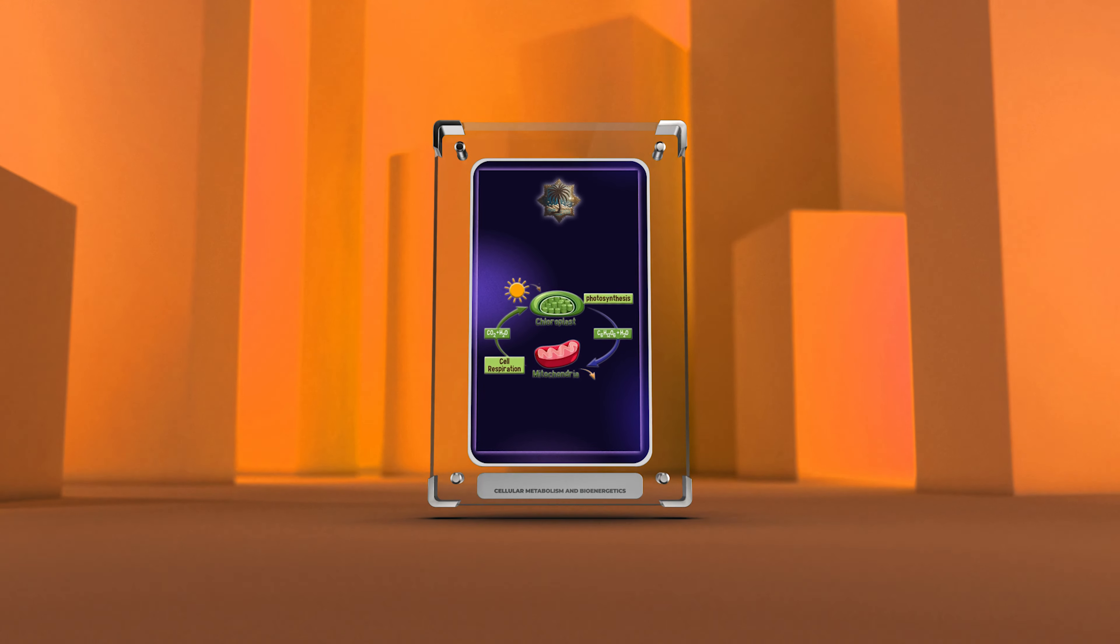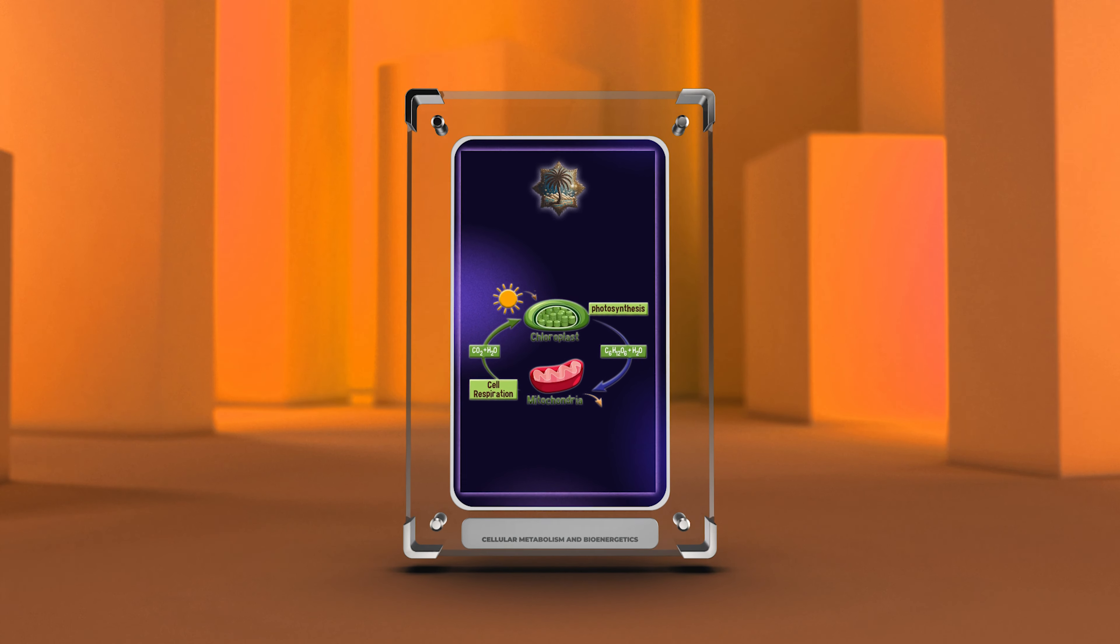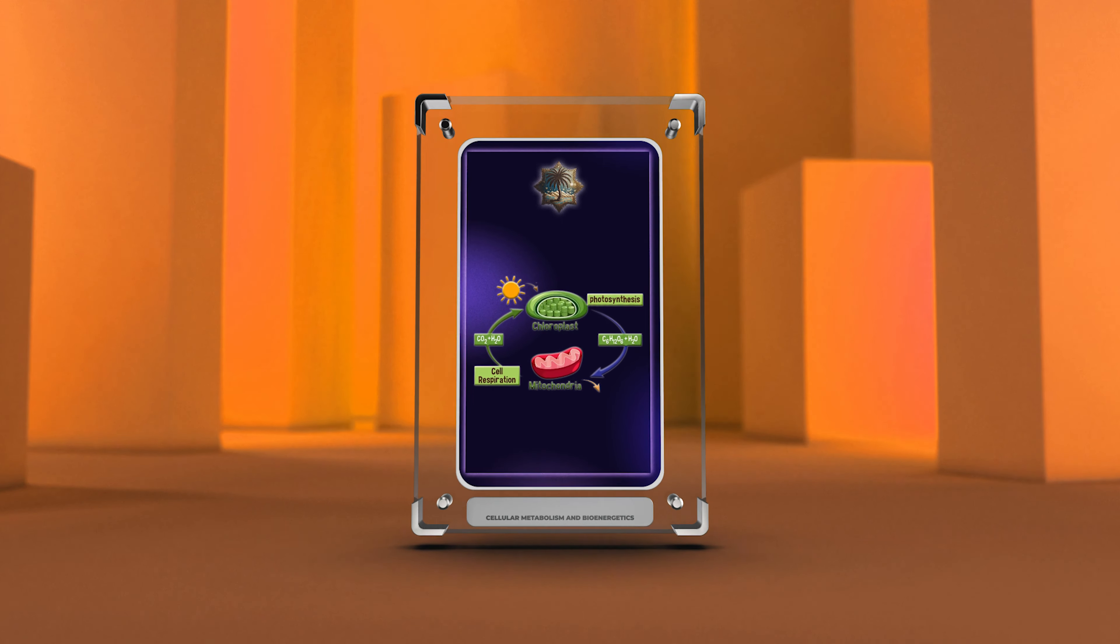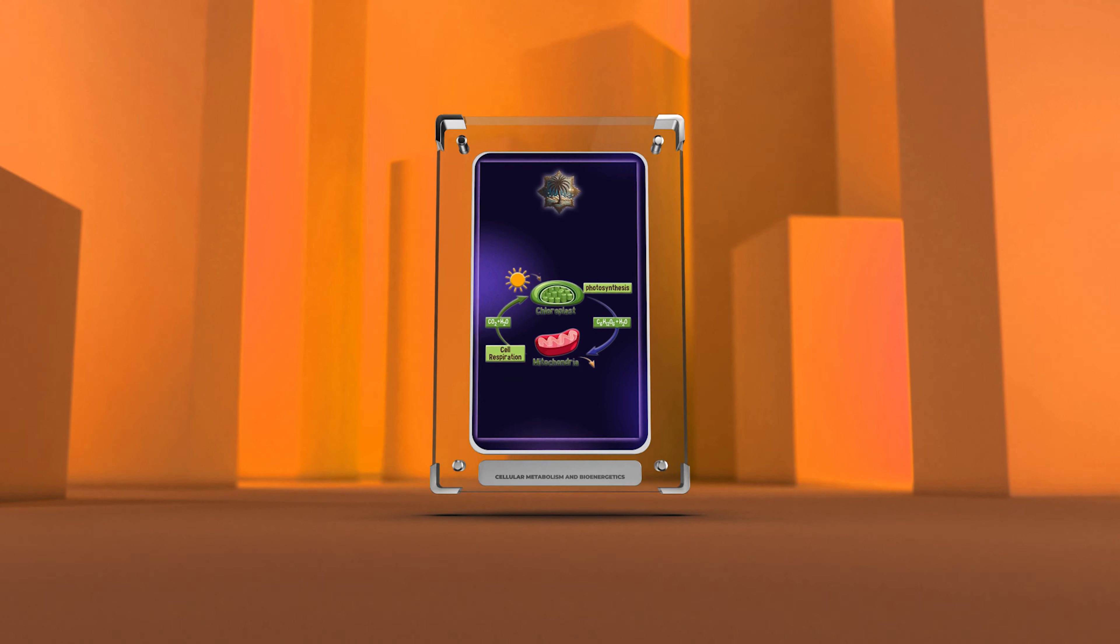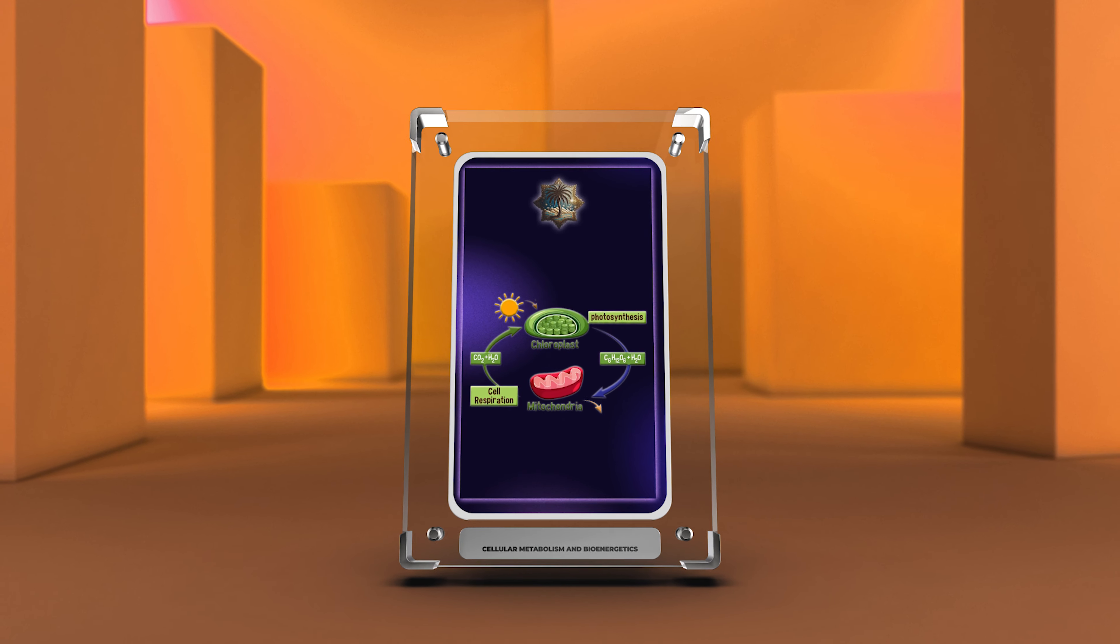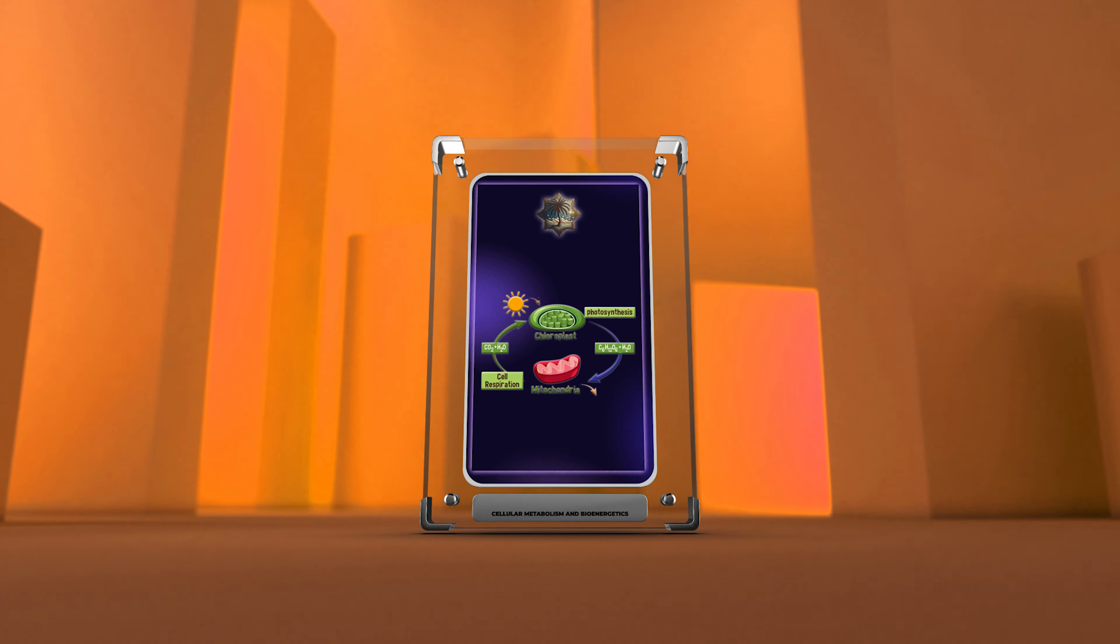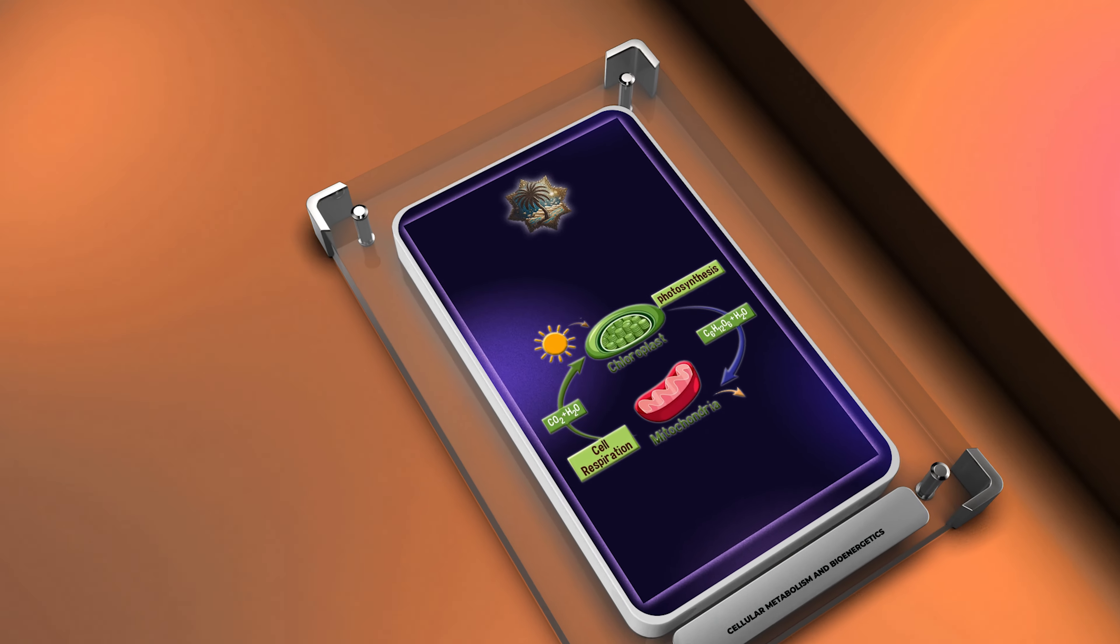Our journey will span from the fundamental concepts of enzymes and chemical reactions to the intricate processes involved in ATP synthesis, glycolysis regulation, Krebs cycle, oxidative phosphorylation, photosynthesis, gluconeogenesis, pentose phosphate pathway, glycogen metabolism, and lipid metabolism. So let us commence our exploration of cellular metabolism and bioenergetics.